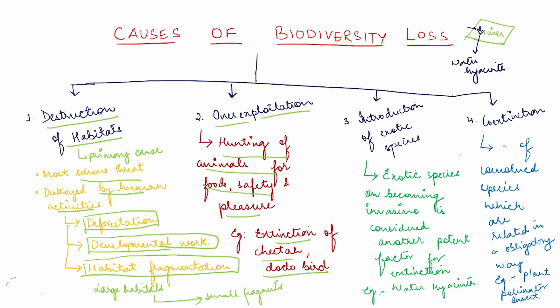Water hyacinth is foreign — it is not native to India. It reproduces by asexual reproduction and its reproduction rate is very high. So it will reproduce and start spreading across the whole lake. After some time, it floats over the river and blocks sunlight. As a result, underwater species do not get the required level of sunlight and dissolved oxygen, which leads to the death of those species.